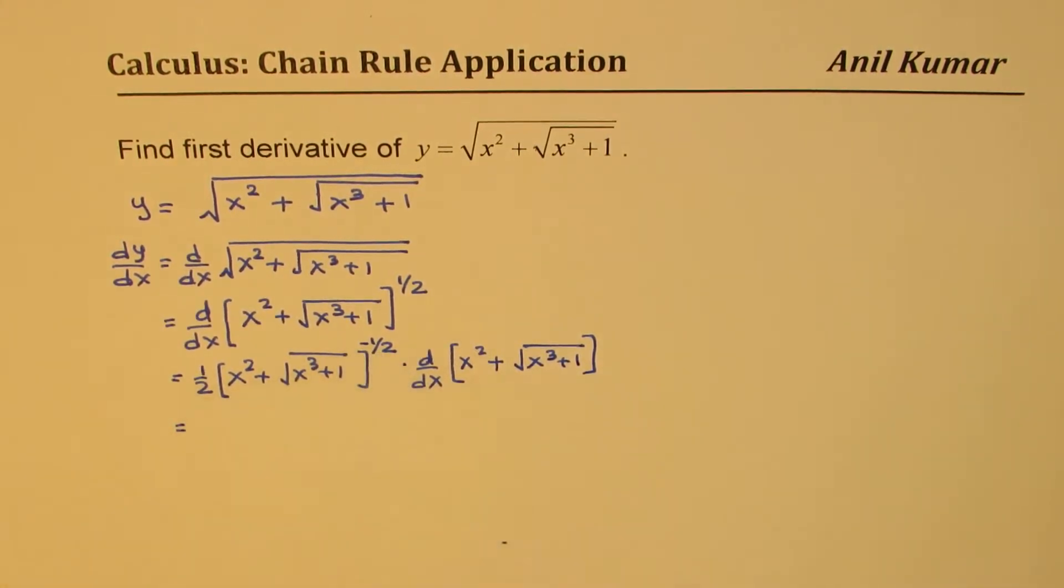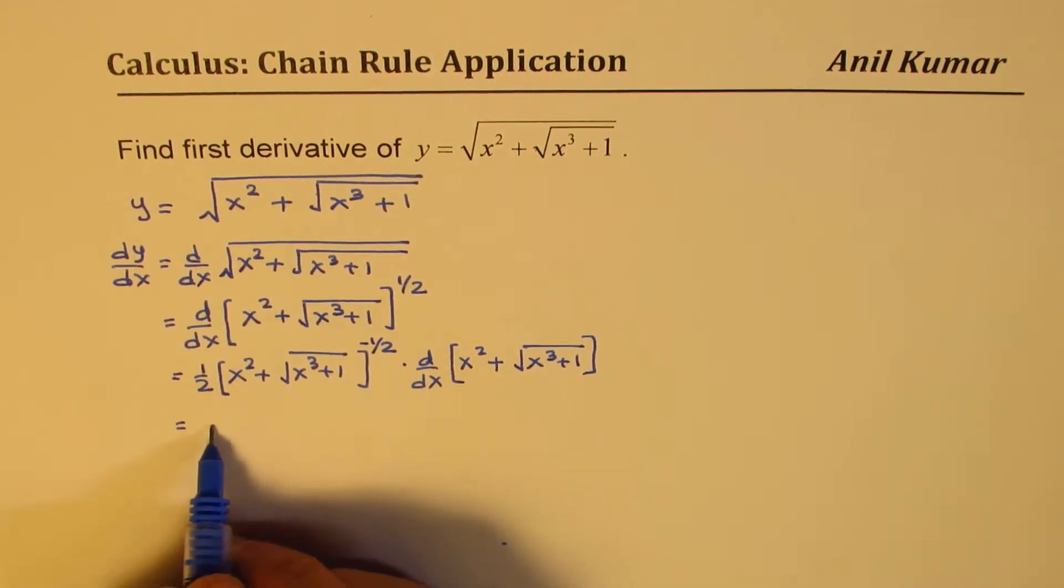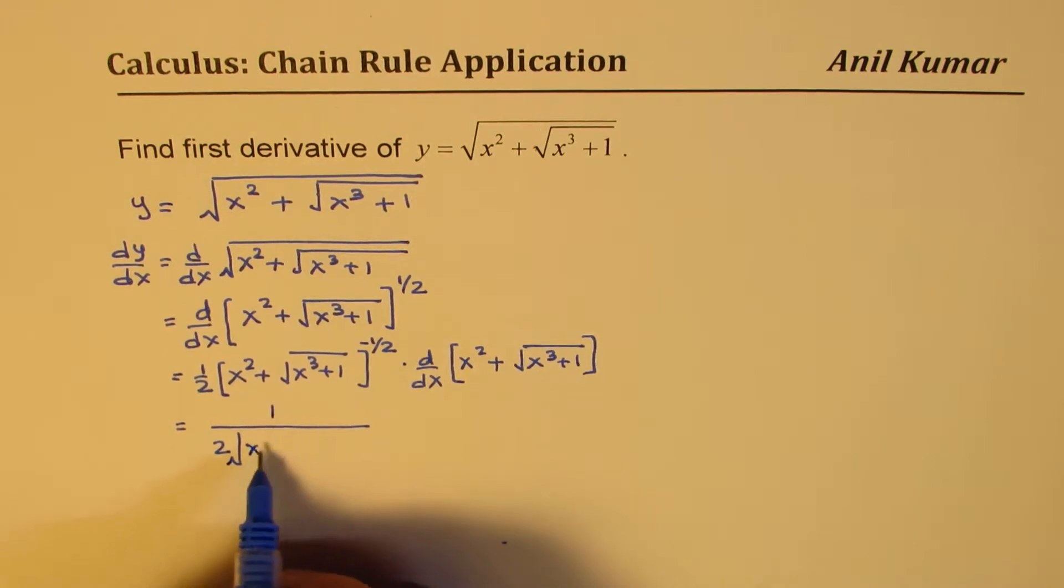Now to the power of minus half means it really comes in the denominator, so I could write this as 1 over 2 square root of x square plus square root of x cube plus 1.